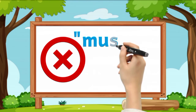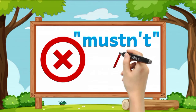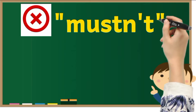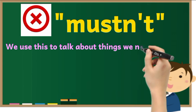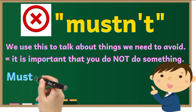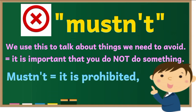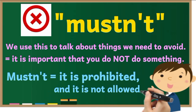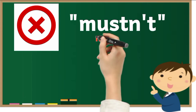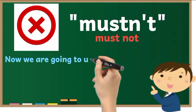Mustn't, or must not. We use this to talk about things we need to avoid — it is important that you do not do something. Mustn't is prohibited and not allowed. It is a negative obligation and the opposite of must.